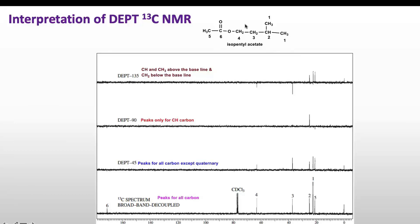First, looking at the general proton-decoupled carbon NMR, we can see a signal for each type of carbon — a total of six signals. Now taking DEPT 45, which shows only peaks for CH, CH₃, and CH₂ carbons, no peaks appear for quaternary carbon. We can see that carbon number six is missing here, which tells us that carbon number six is a quaternary carbon.